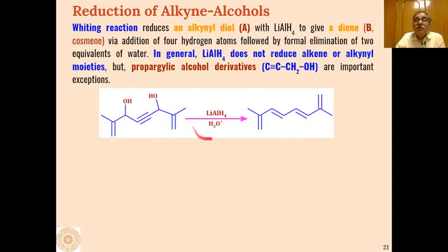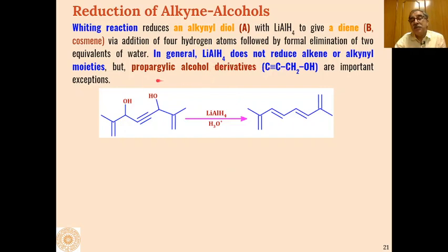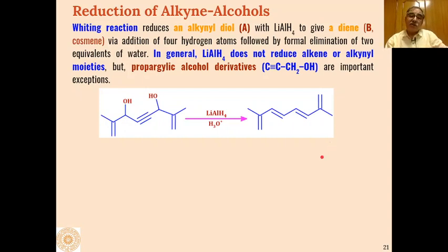LAH can also react with propargyl alcohol (propargyldiol) derivatives in what is known as a Wittig-type reaction, where alkenyl diols give dienes as products. This is a special type of LAH reduction — normally LAH does not reduce alkenes or alkynes (C=C and C≡C bonds are unaffected by LAH), but when propargyl alcohols are present, they are reduced to dienes, forming carbon-carbon double bonds in the product.